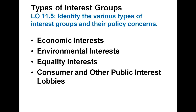Political scientists loosely characterize interest groups into four main policy areas. Some deal primarily with economic issues, others with issues of the environment, others with equality issues, and still others with interests of all consumers.